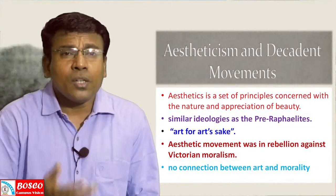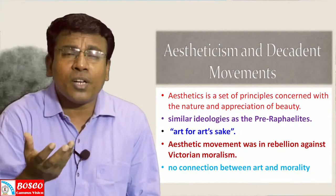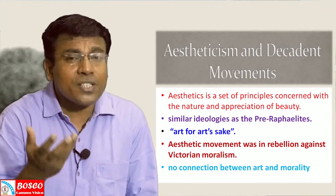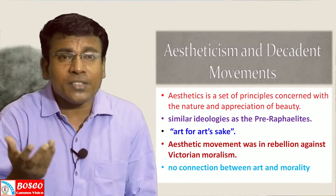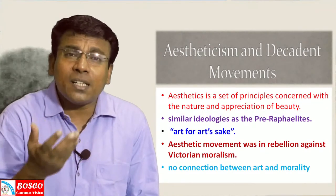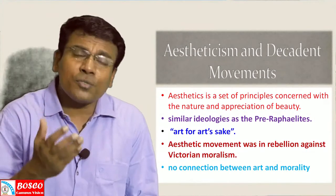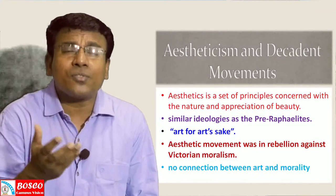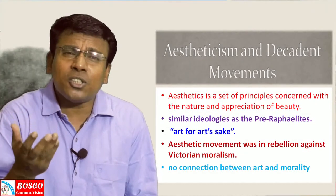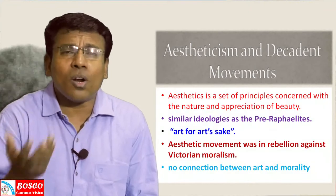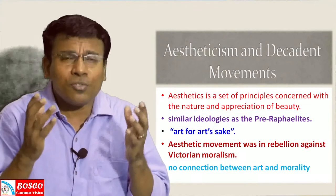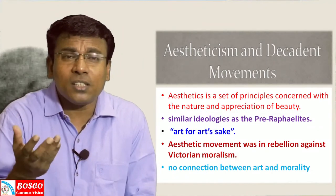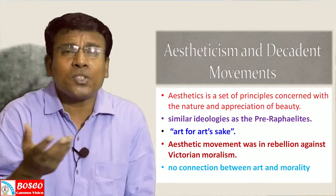Like the Pre-Raphaelites, the Aestheticians held on to the motto Art for Art's Sake. This phrase is the translation of a French slogan and is associated in English art and letters with the Oxford don Walter Pater and his followers in the Aesthetic movement. The Aesthetic movement was a rebellion against Victorian moralism — the passing of moral judgement — asserting that art is not meant to teach morality.